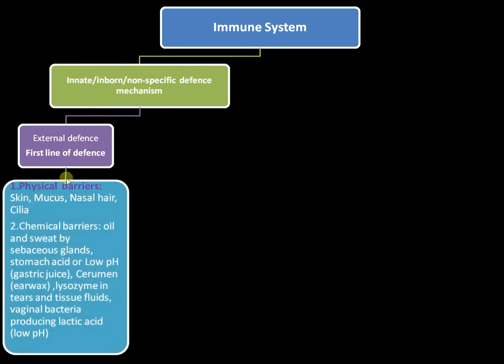Just like a fortress, there is an external defense forming the first line of defense. The first line of defense includes physical barriers like skin, mucus, nasal hairs, and cilia. Skin is impervious to water and most pathogens cannot penetrate it. When bacteria or viruses enter through openings, mucus and nasal hairs help trap and eliminate them from the system.